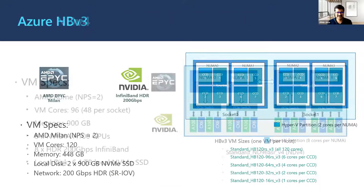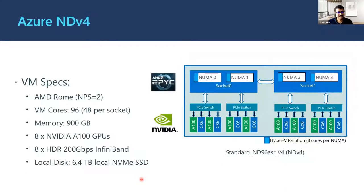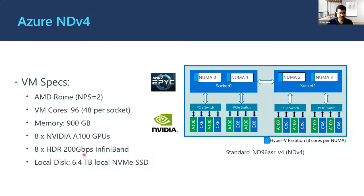The NDV4 is a really powerful SKU based on AMD Rome. Again it's a NUMA architecture, but here we take out eight cores per each NUMA node — eight by four equals 32 cores taken out — and the rest 96 cores are exposed to the VM. These VMs have 900 GB memory per VM, eight A100 GPUs, eight InfiniBand 200 Gb/s links, and 6.4 TB of local disk.